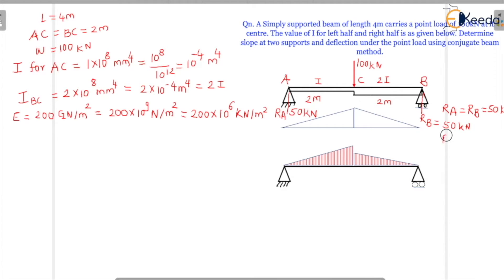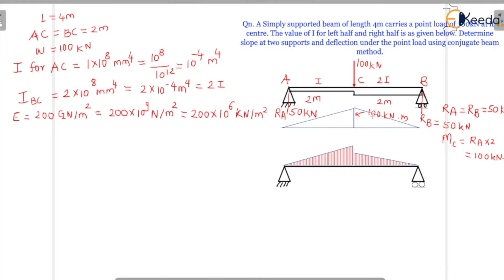Now we draw the bending moment diagram. The bending moment at point C equals RA × 2, which is 50 × 2 = 100 kNm. So the bending moment at C is 100 kNm.